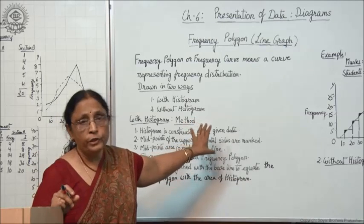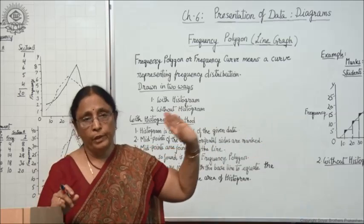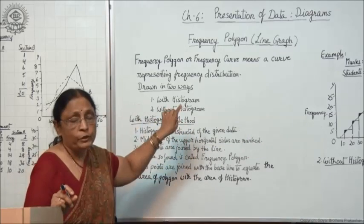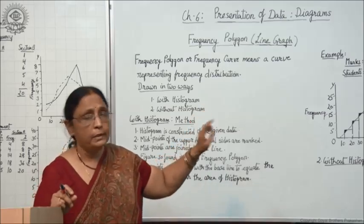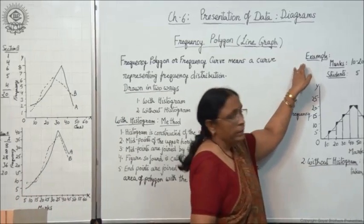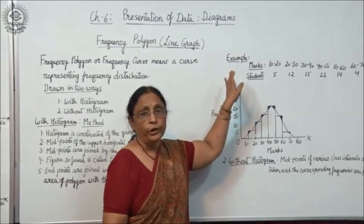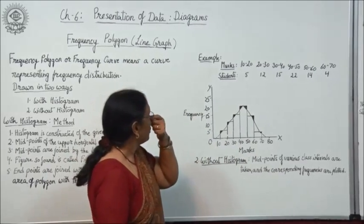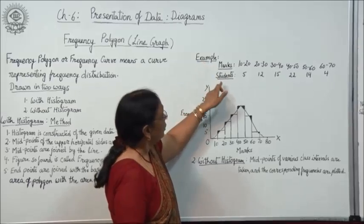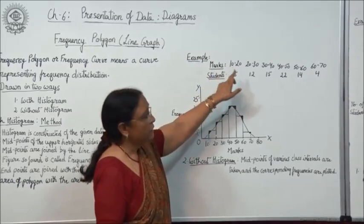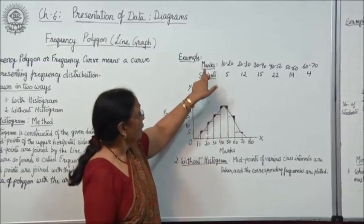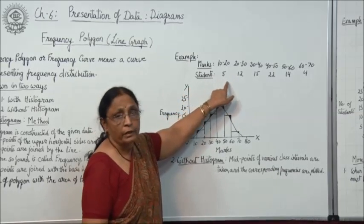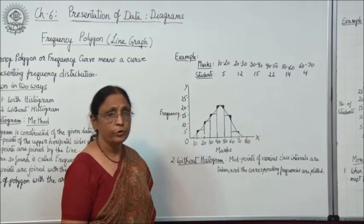The next step is that the endpoints are joined with the baseline to equate the area of the polygon with the area of the histogram. This will be more clear when you see the example. Now I will explain both methods with the help of examples. First, this is the example of drawing frequency polygon with the help of histogram. Here we have marks and number of students as the given data.